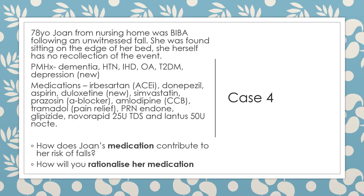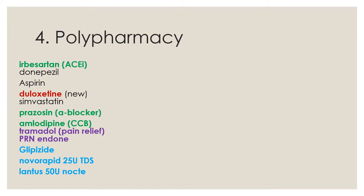Moving on to case four. 78-year-old Joanne from a nursing home was brought in by ambulance following an unwitnessed fall. She was found sitting on the edge of a bed and has no recollection of the event. Past medical history: dementia, hypertension, ischemic heart disease, osteoarthritis, type 2 diabetes, and depression. Medications include irbesartan, donepezil, aspirin, duloxetine, simvastatin, prazosin, amlodipine, tramadol, PRN oxycodone, glipizide, NovoRapid, and Lantus. How does Joanne's medication contribute to her risk of falls, and how will you rationalise the medication?